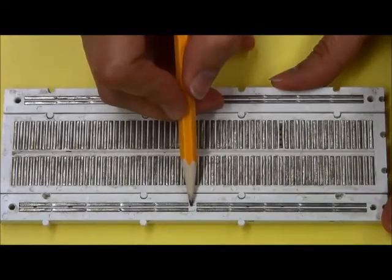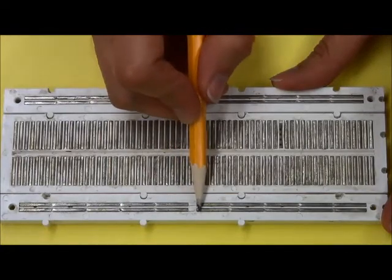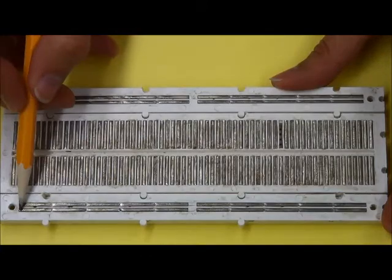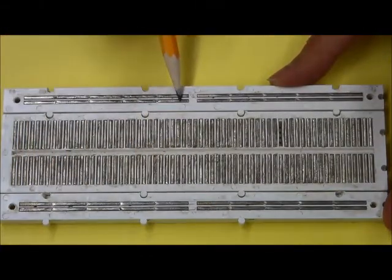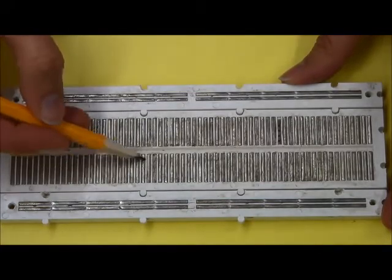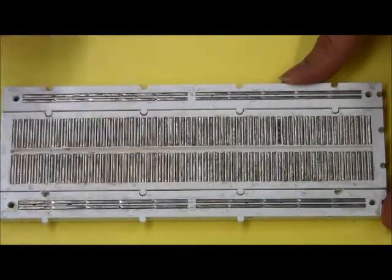So underneath here you can see that there are strips of metal. Now this particular one has a break in the middle, so there is no connection between here and here, but you can see that anything that would be connected here would be connected all the way across. So these are my horizontal connections and these are my vertical connections. That's what's happening inside the board.